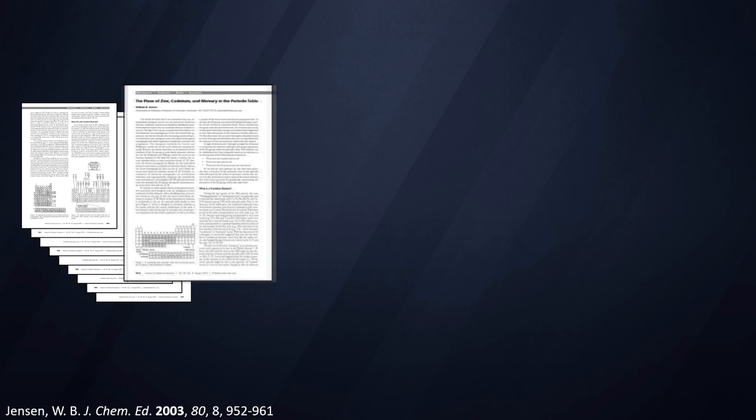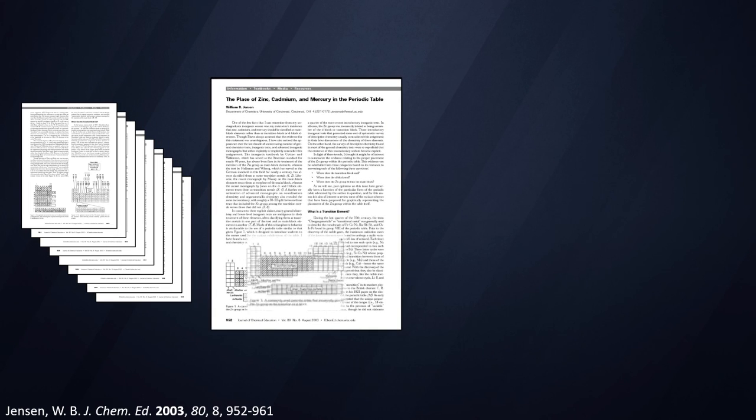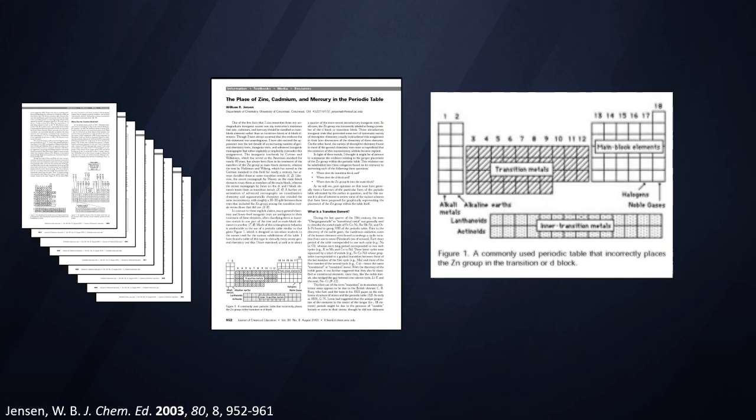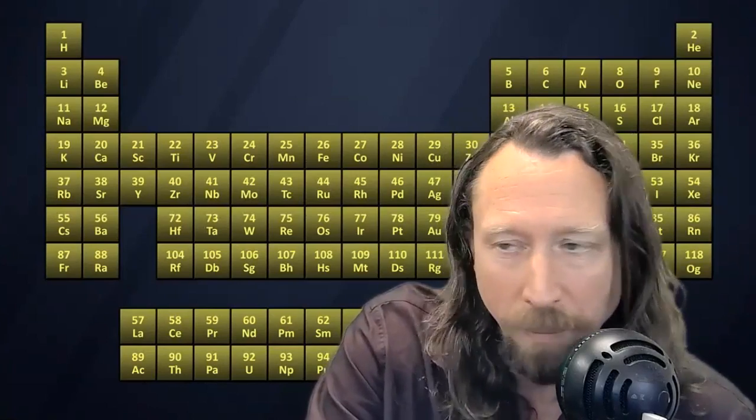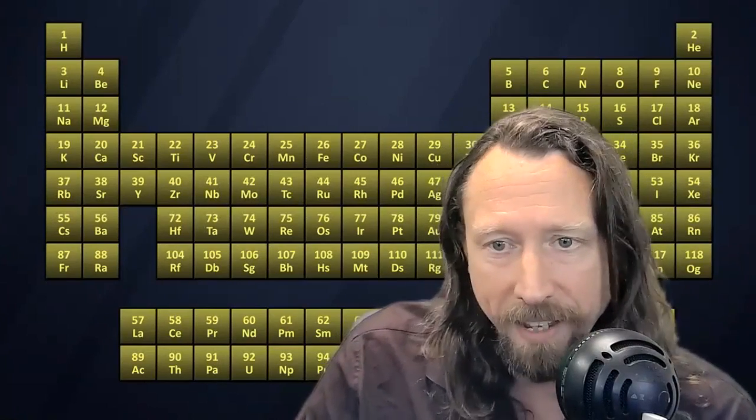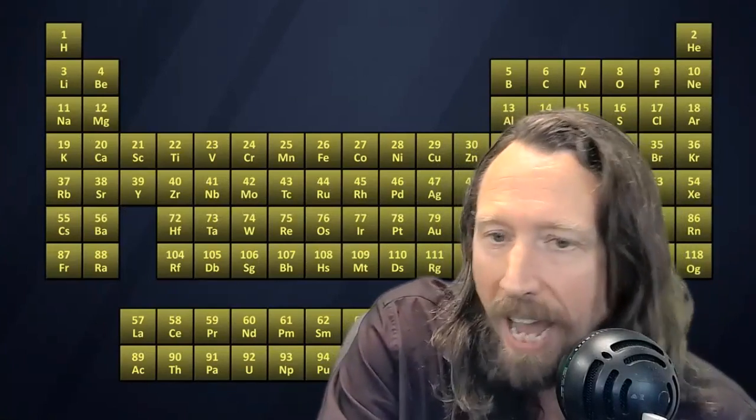There's a paper that I read in preparation for this video written by William B. Jensen back in 2003 in Journal of Chemical Education, and Jensen doesn't mince words here. Early in the paper he shows a figure of what he says is a commonly used periodic table that incorrectly places the zinc group, or group 12, into transition elements. Why would he assert this so early in the paper? Because he thinks this is true. He's got evidence here. He's going to make an argument.